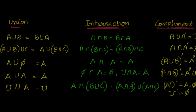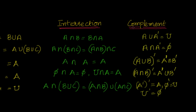Now for complement properties: A∪A' = U, because A union (U minus A) is nothing but U. A∩A' = φ, because A and A' will not have any common elements, so it is always the empty set. We also have (A∪B)' = A'∩B' and (A∩B)' = A'∪B' (De Morgan's laws). We will look into these using Venn diagrams. Also, (A')' = A, φ' = U, and U' = φ.